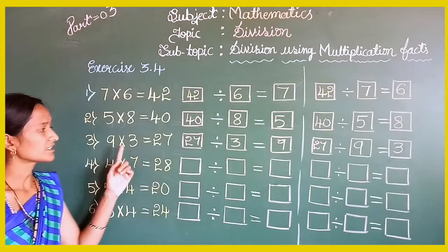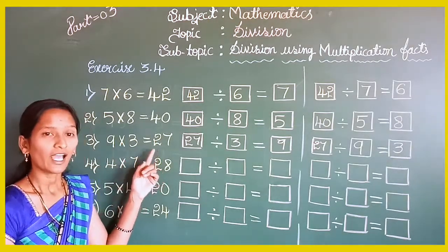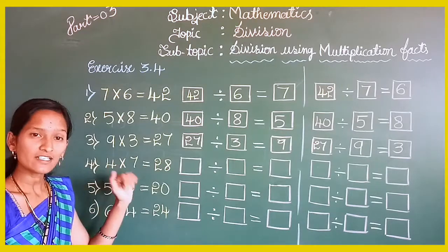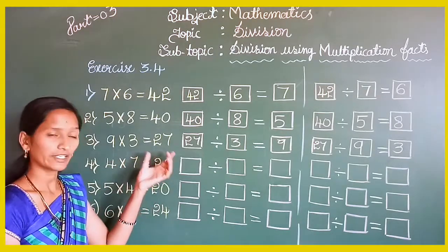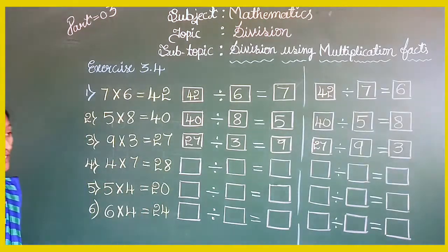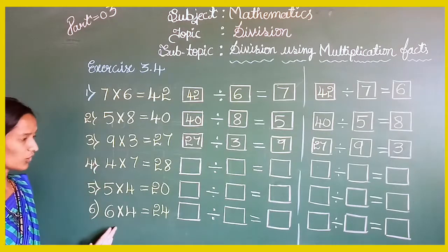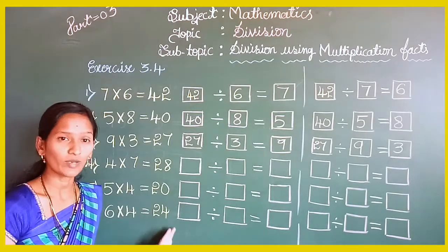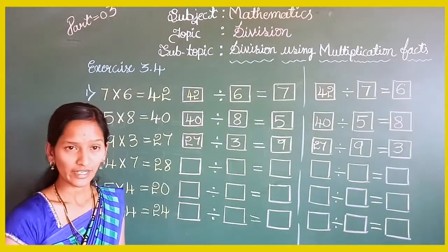9 threes are equals to 27, and 3 nines are also equals to 27. You have to solve the remaining 3 problems at home.